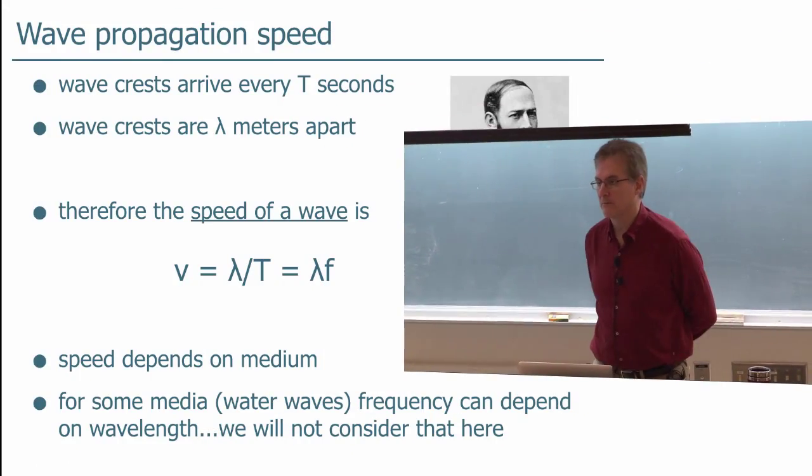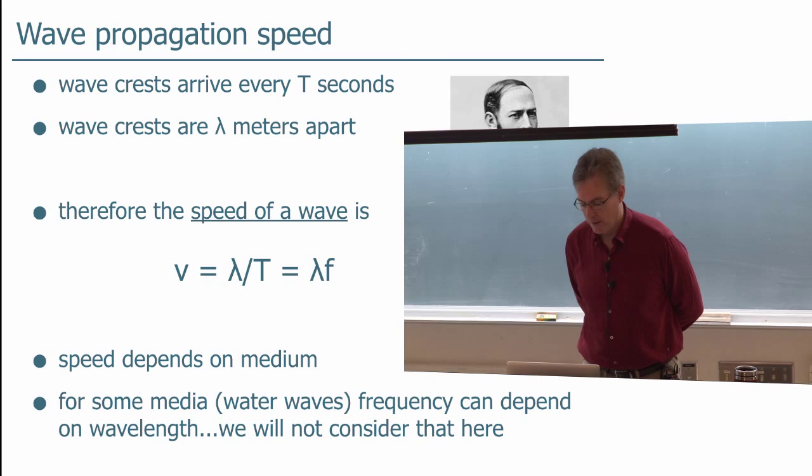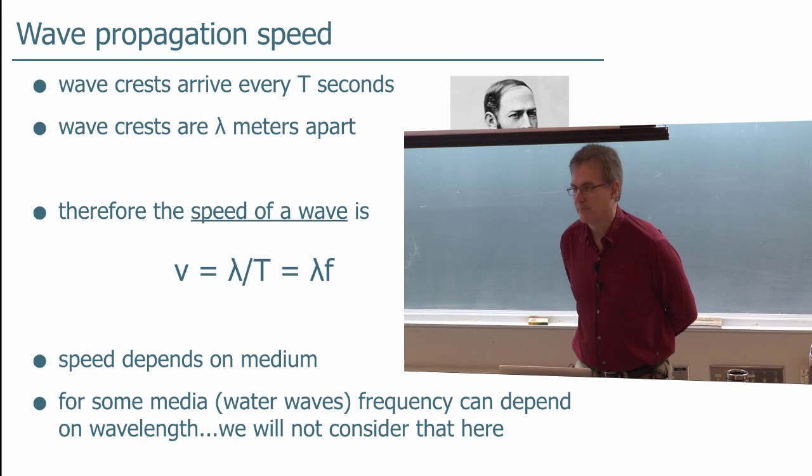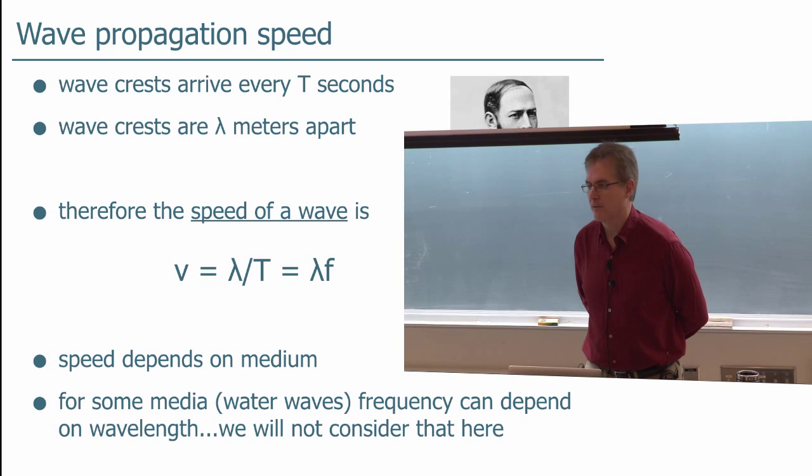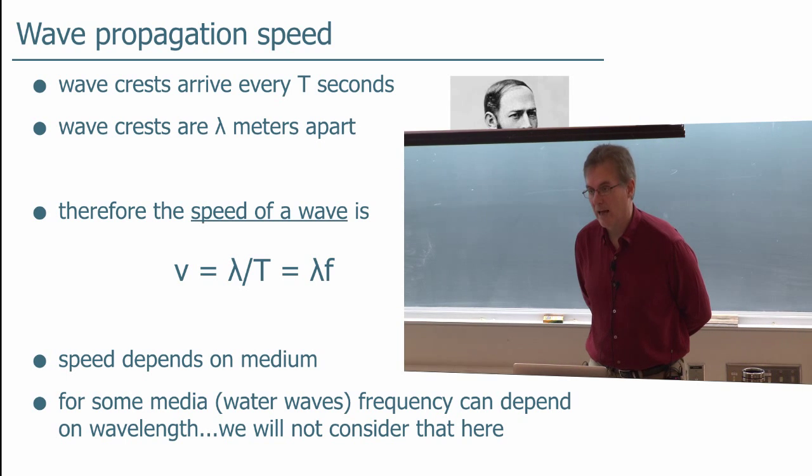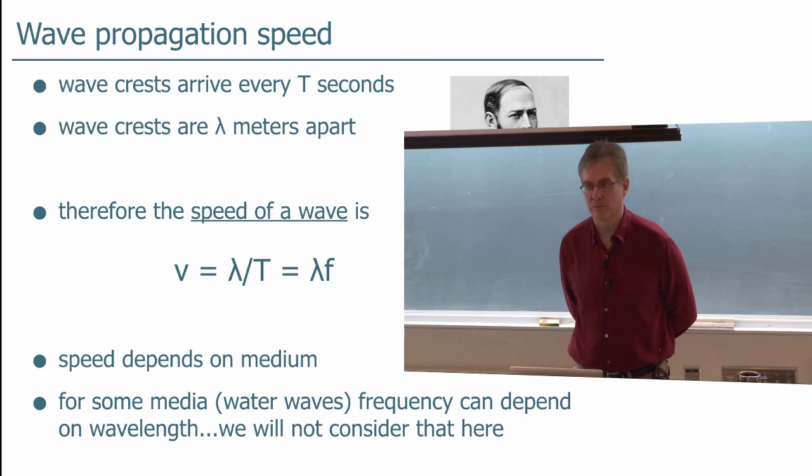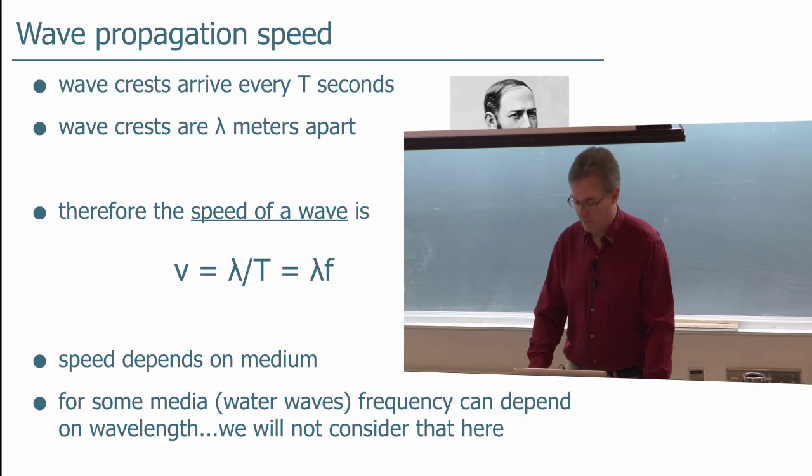For some media like water waves, the frequency can depend on wavelength. We're not going to consider that here. Maybe you should think of it the other way around that the wavelength depends on the frequency. But it depends on your point of view. Now for glass, you do have dispersion in terms of different, light travels through glass at different speeds depending on its wavelength. That's why you can get nice rainbows coming from prisms. And we'll come to that a little bit later. But we won't really be considering that in the first couple weeks of this course.